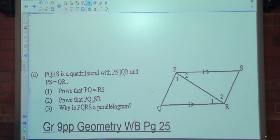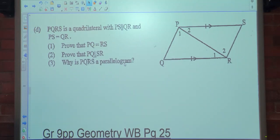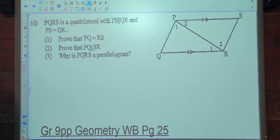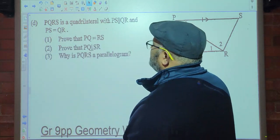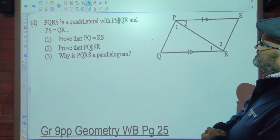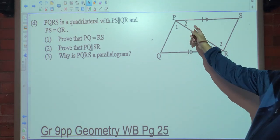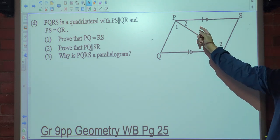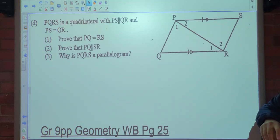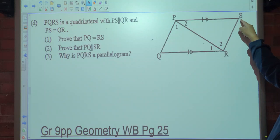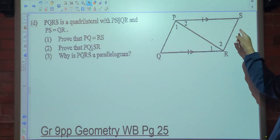Are we still on page 25? Yes. Alright then, you get part D. PQRS is a quadrilateral with PS being parallel to QR. A quadrilateral means a four-sided figure. With PS being parallel, the alternate angles are equal. We are also told that PS is equal to QR. Prove that PQ is equal to RS.